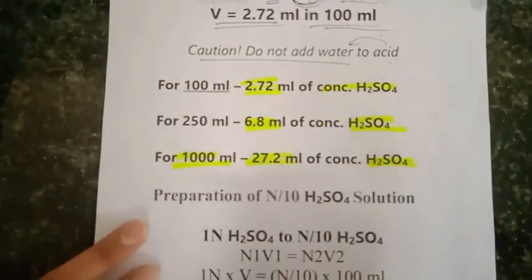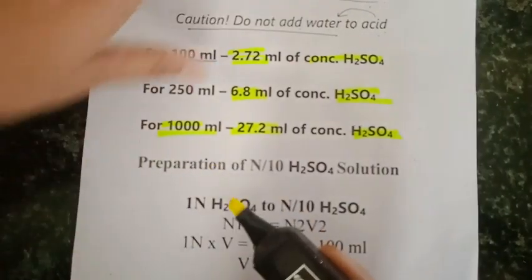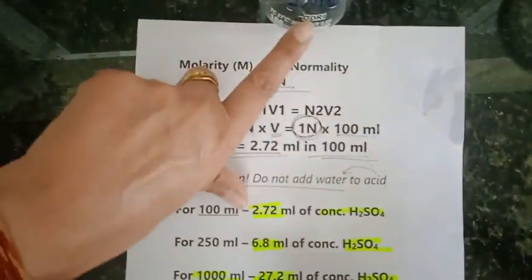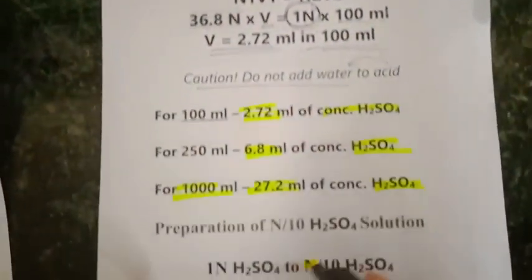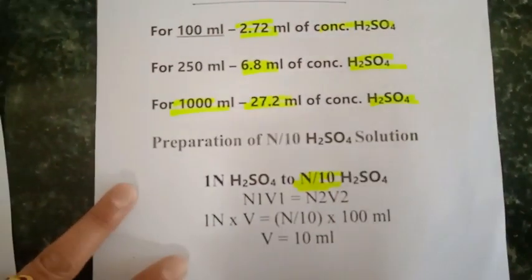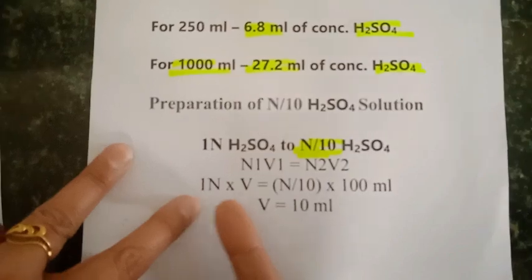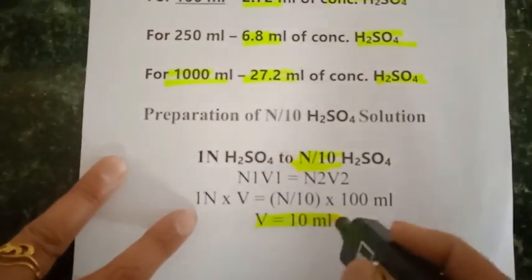If you want to prepare N/10 of this solution, we again use this normality equation. Take 10 ml of this one normal solution and add it to another measuring flask, then make up to 100 ml so that we will have N/10 H2SO4 solution.